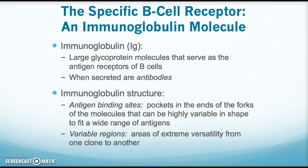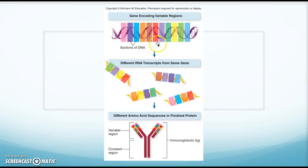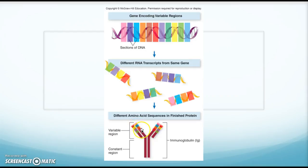There are sections of DNA that encode for the variable region, and depending on transcription from the same gene, this portion of the immunoglobulin molecule is variable and changeable — very different for each clone. There is a constant region that attaches to the B cell, and then the variable region is where the antigen binds. Because each B cell has a different immunoglobulin, there should be a specific one for every antigen. The entire Y-shaped molecule is considered the immunoglobulin.